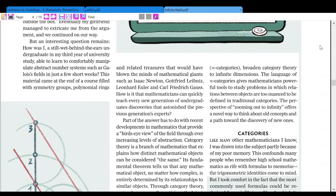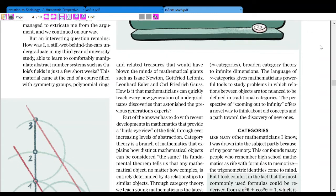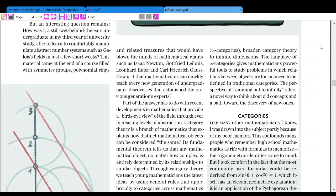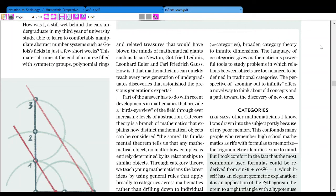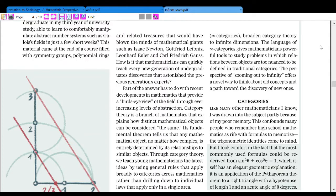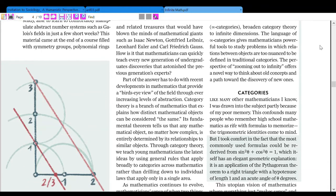But an interesting question remains. How was I, a still wet behind the ears undergraduate in my third year of university study, able to learn to comfortably manipulate abstract number systems such as Galois fields in just a few short weeks? These materials came at the end of a course filled with symmetry groups and related treasures that would have blown the minds of mathematical giants such as Isaac Newton, Gottfried Leibniz, Leonhard Euler, and Carl Friedrich Gauss.